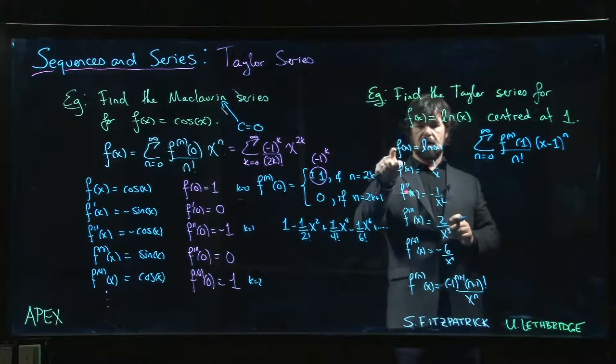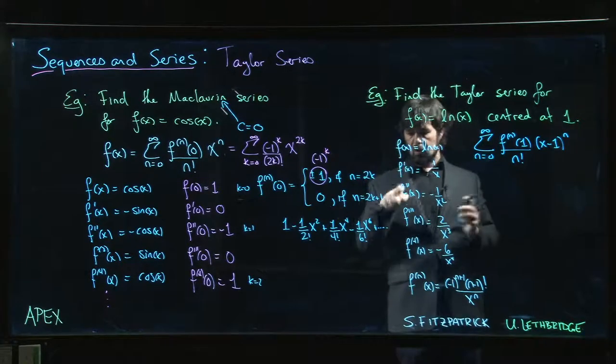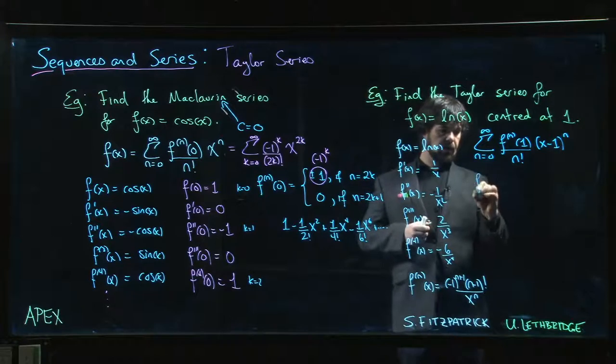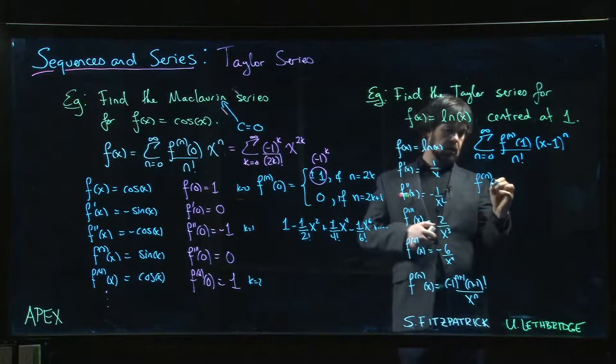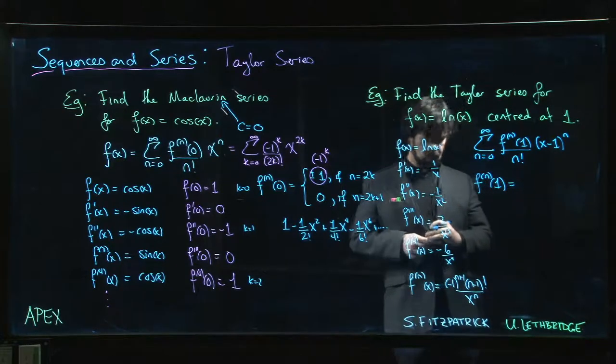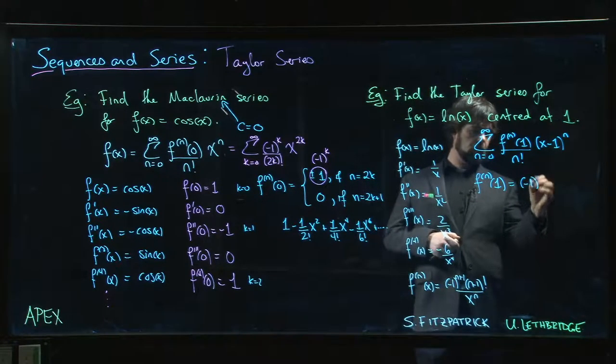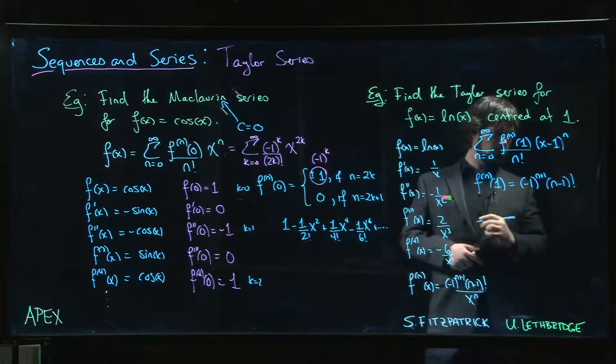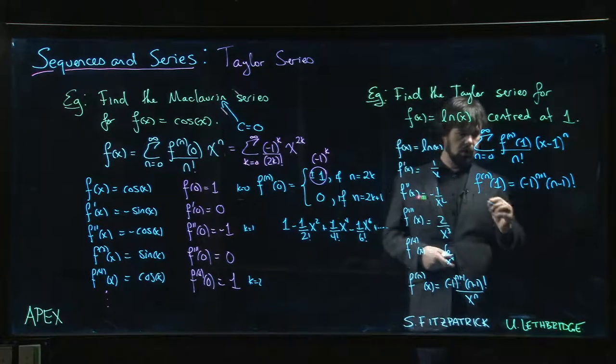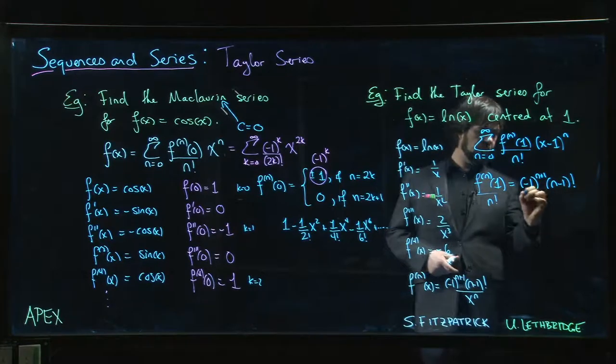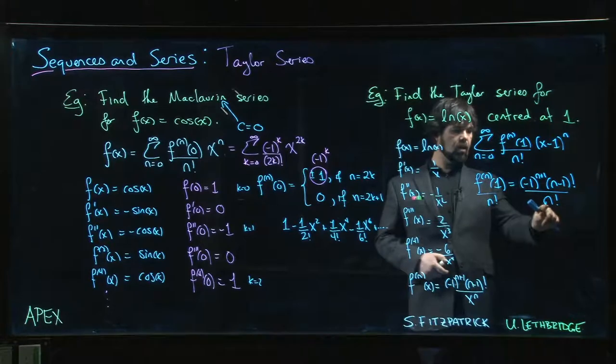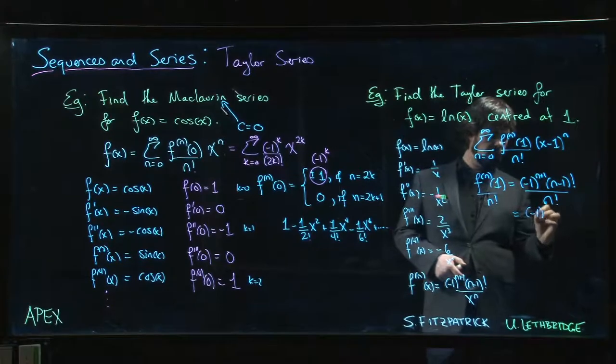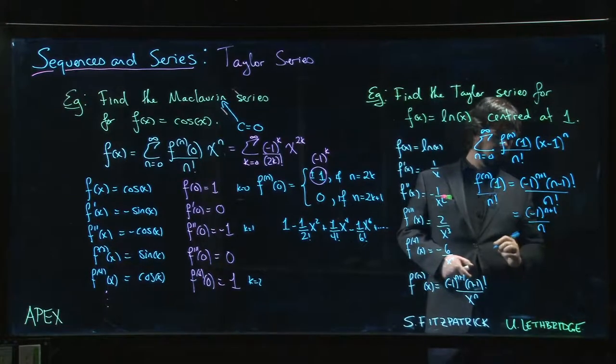So let's see, f of, well, f of 1 is 0, f prime of 1 is 1. Let's just plug it in down here. The nth derivative at 1 is equal to minus 1 to the n plus 1 times n minus 1 factorial. Well, divided by 1 to the n, that's just 1. And hey, while we're at it, let's put the n factorial in there. And remember, the n factorial is just n times n minus 1 factorial. So we can simplify this down to minus 1 to the n plus 1 over n.